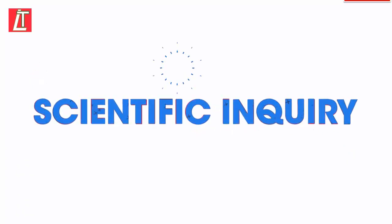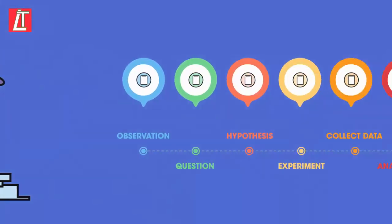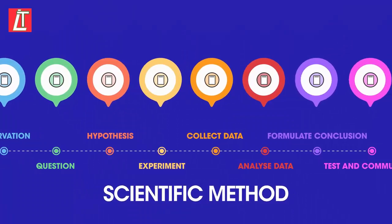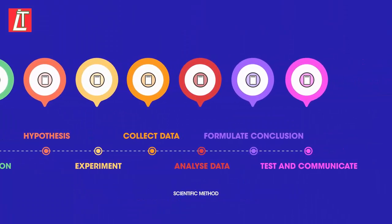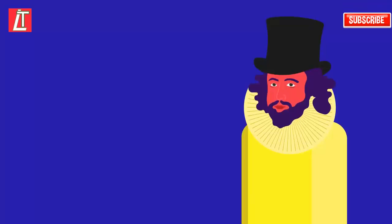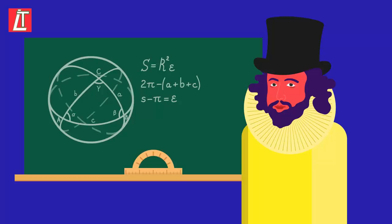How is scientific inquiry carried out in practice? Before a hypothesis is accepted by the scientific community, it goes through a series of steps. This is what we call the scientific method. This method was first devised by Sir Francis Bacon, an English scientist and philosopher. He argued that evidence was needed in order to prove that something was true.